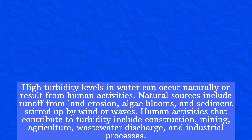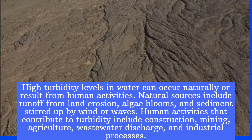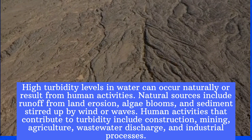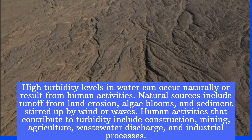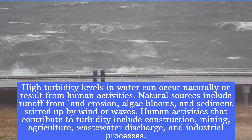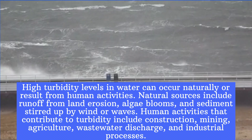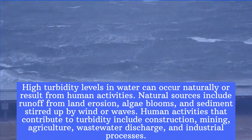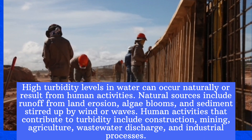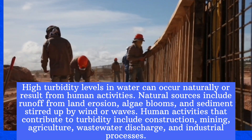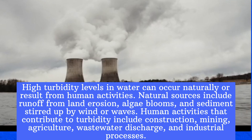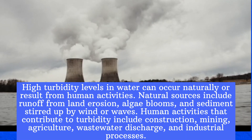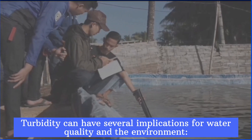High turbidity levels in water can occur naturally or result from human activities. Natural sources include runoff from land erosion, algae blooms, and sediments stirred up by wind or waves. Human activities that contribute to turbidity include construction, mining, agriculture, wastewater discharge, and industrial processes.